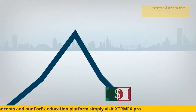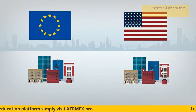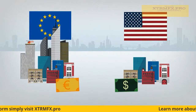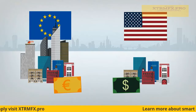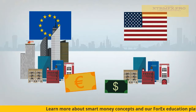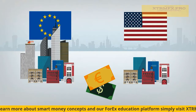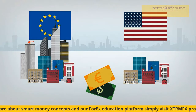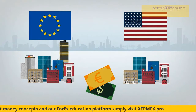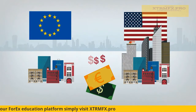Let's look at an example. Suppose an investor thinks Europe's economy is going to grow faster than the United States, and as a result, she thinks the euro will strengthen against the U.S. dollar. She can buy the euro versus the U.S. dollar pair to speculate on her assumption. If the price of the currency pair rises, she'll make money. Conversely, if the price falls, she'll experience a loss.